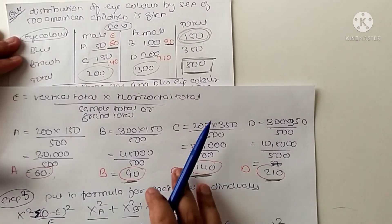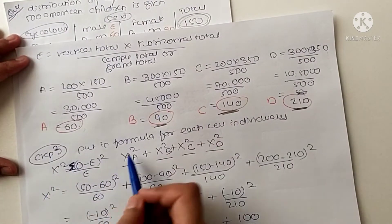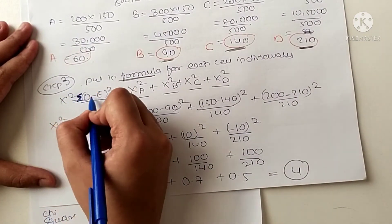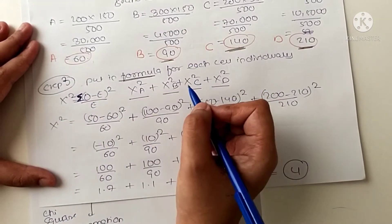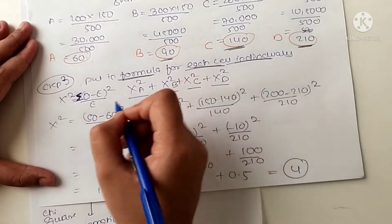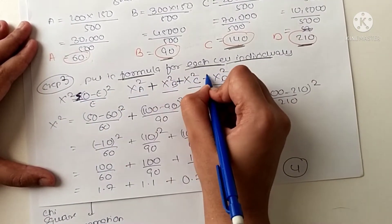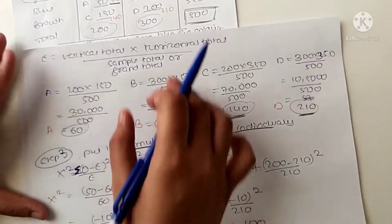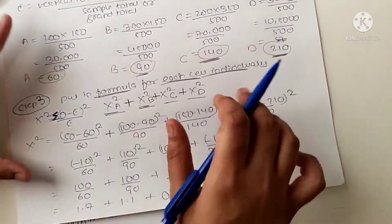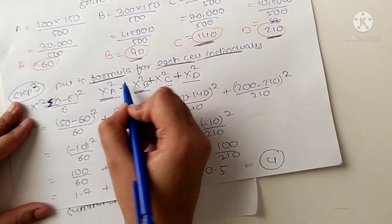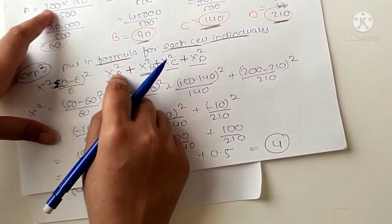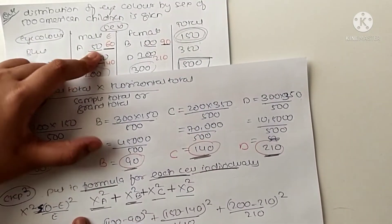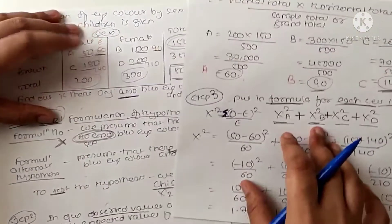After calculating expected values, we move to step three: put the values into the chi-square formula. Chi-square equals summation of (observed minus expected) squared divided by expected value, calculated individually for each cell A, B, C, D. For cell A, the observed value is 50, so it is (50 minus 60) squared divided by 60.